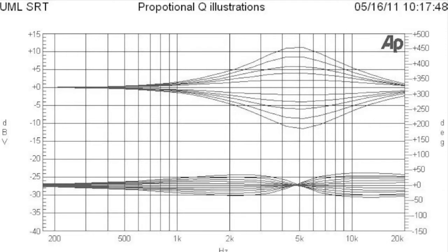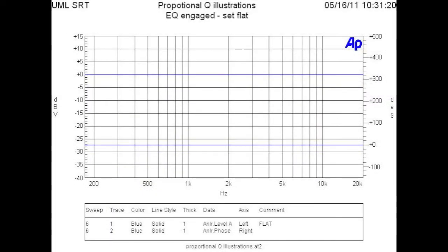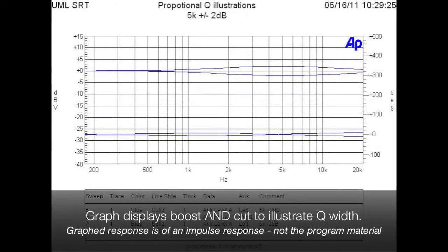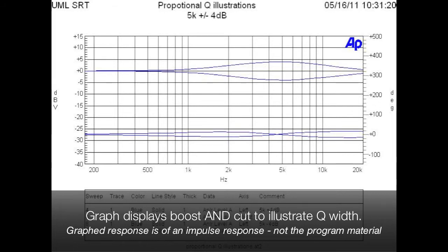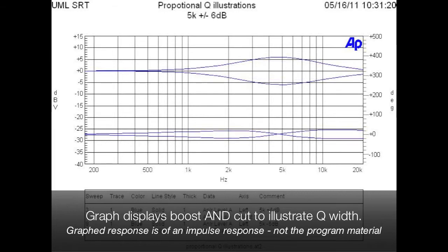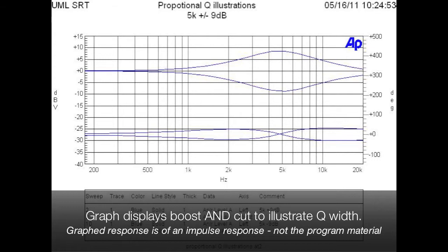To illustrate this quality, we'll listen to some pink noise. We'll begin by hearing it flat. 5 kHz boosted 2 dB, boosted 4 dB, boosted 6 dB, boosted 9 dB, boosted 12 dB.